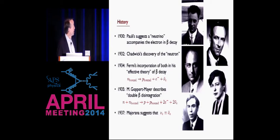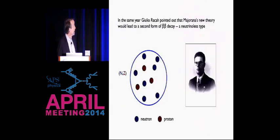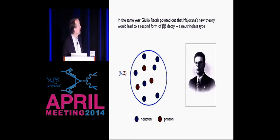Then in 1937, two years later, Majorana suggested that possibly another description of the neutrino was possible — where the neutrino and the antineutrino were indistinguishable. That is, there's no charge to necessarily distinguish those two particles, so they might be identical, and this might be an acceptable theory of Pauli's neutrino. That same year, Racah pointed out that if Majorana's new theory were correct it could actually be tested, because it would lead to a second form of double beta decay — a neutrinoless type.